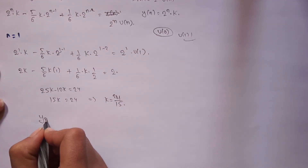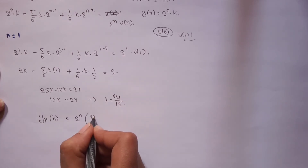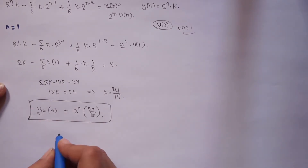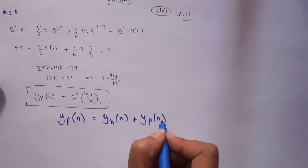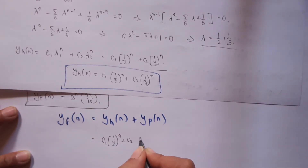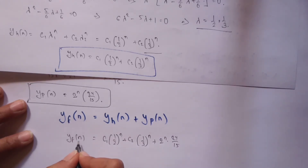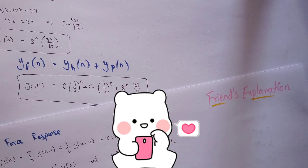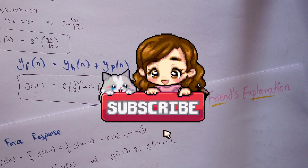The particular solution is y_p of n = (24/15) * 2^n. Now combining the homogeneous and particular responses, the forced response is: y_f of n = c1*(1/2)^n + c2*(1/3)^n + (24/15)*2^n. This is the forced response of the given system. Please like the video if you understood everything, and subscribe to the channel if you haven't yet, as it motivates me to make more such videos.